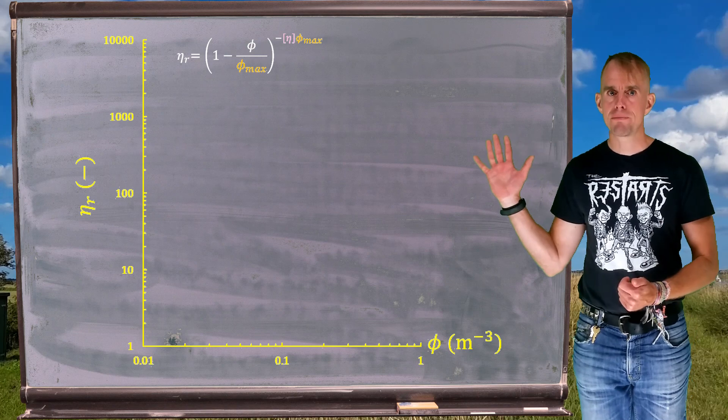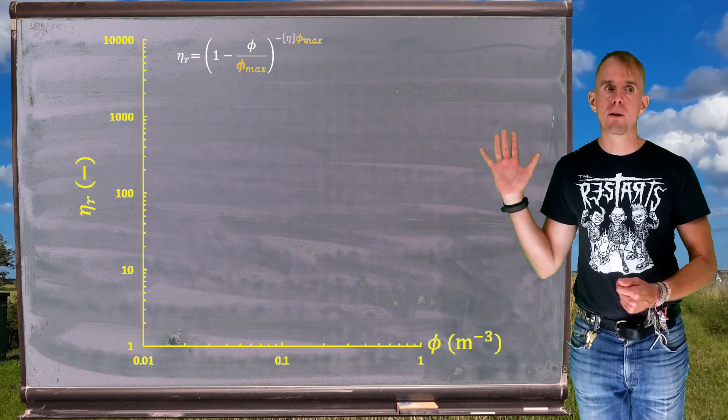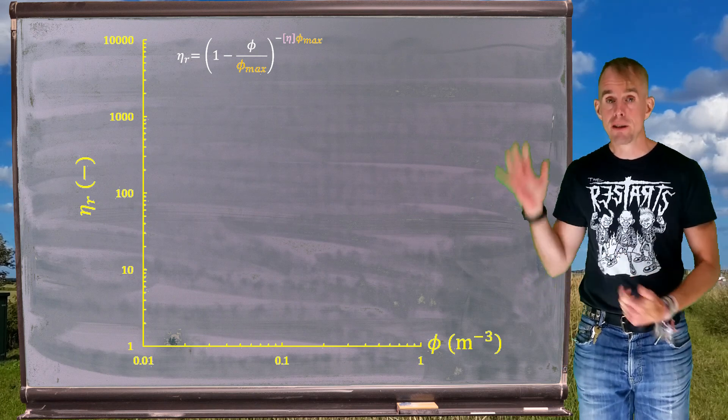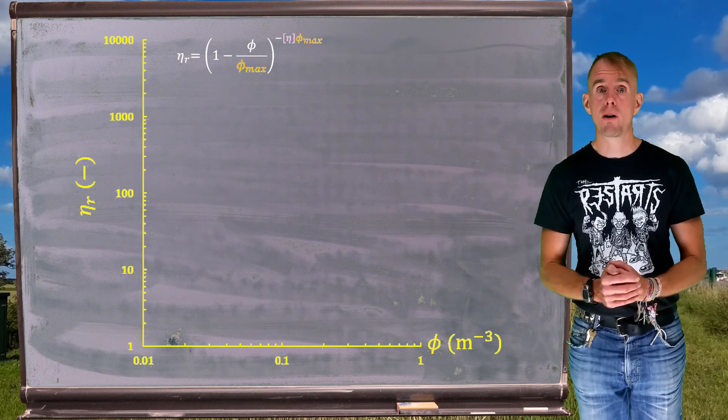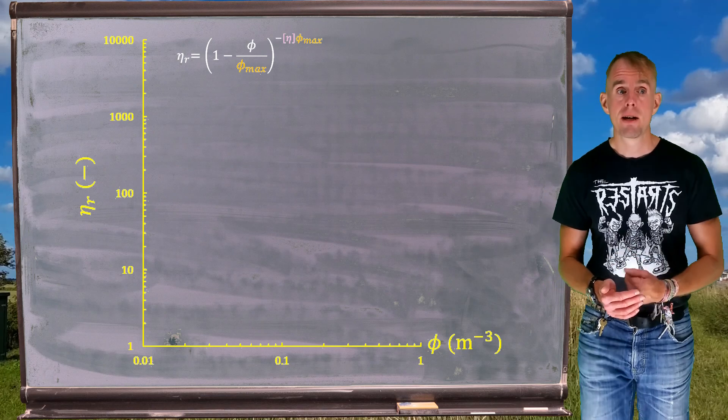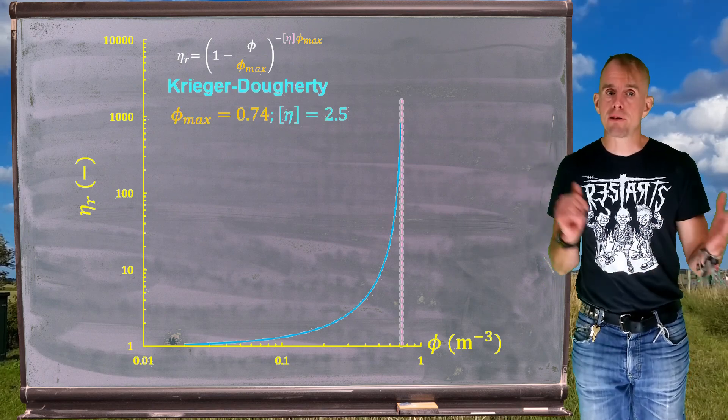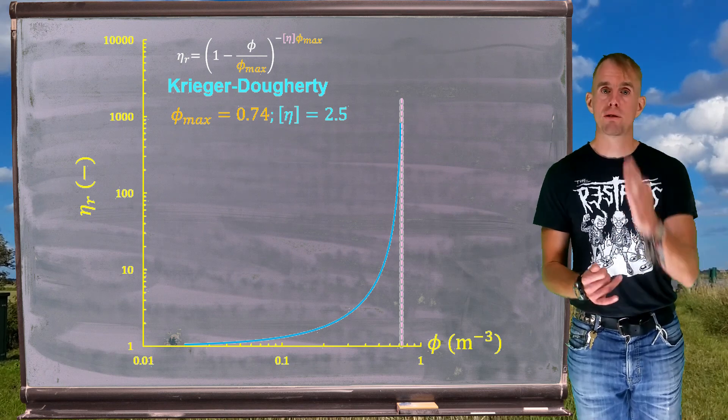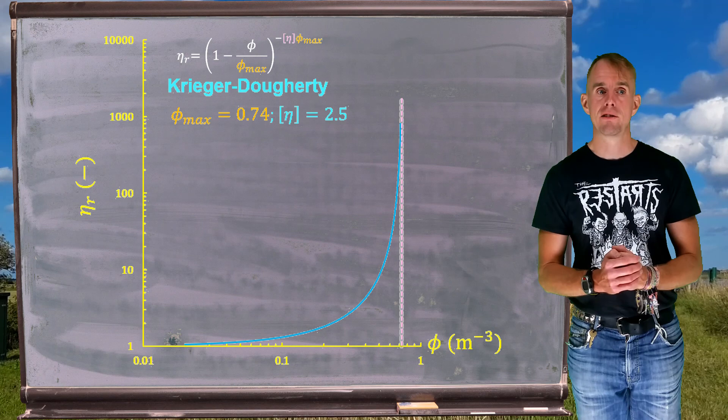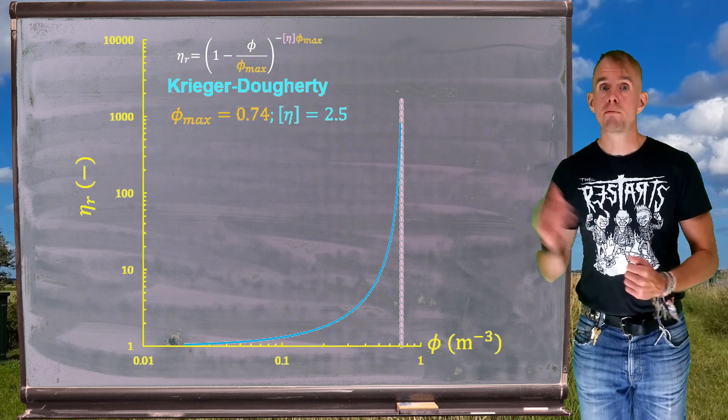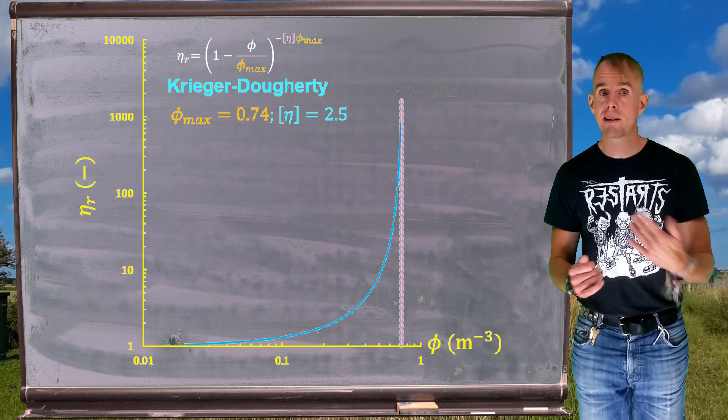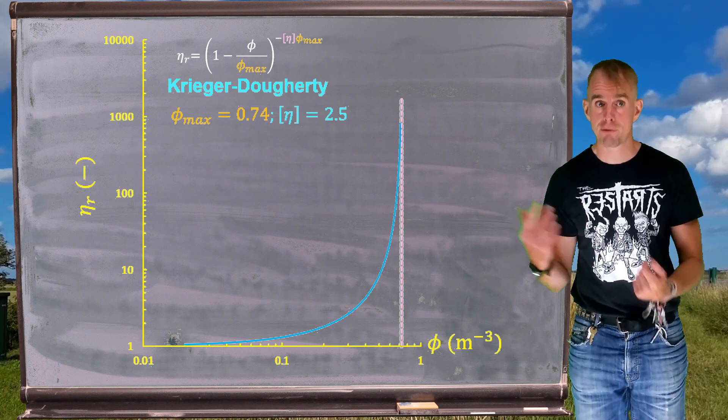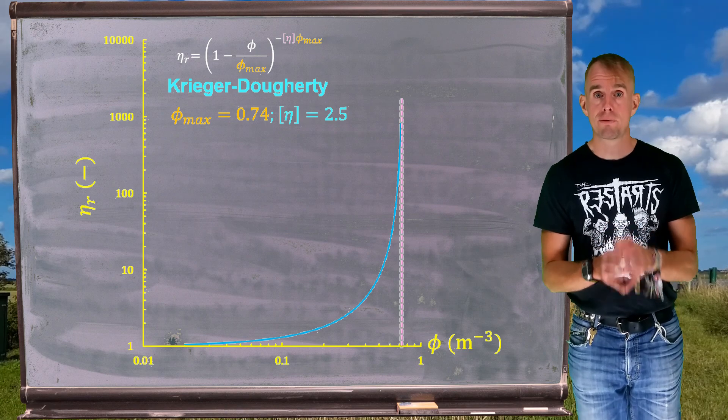So here on the board is a graph that plots out relative viscosity as a function of particle volume fraction for Krieger-Dougherty. The Krieger-Dougherty expression is there on the board as a reminder, and remember what we saw was that as we approach the maximum volume fraction of particles φ_max, the relative viscosity starts to asymptote off to infinity. The curve that I've put on the board is for spheres, so φ_max in this case is for hexagonal close packing, φ_max is 0.74, and the intrinsic viscosity is 2.5.